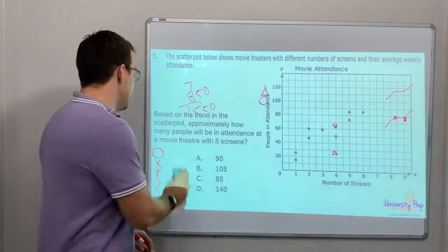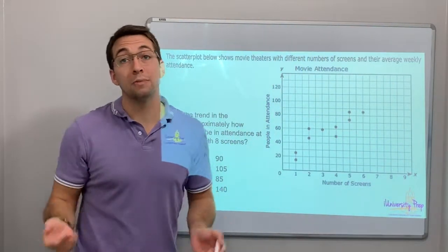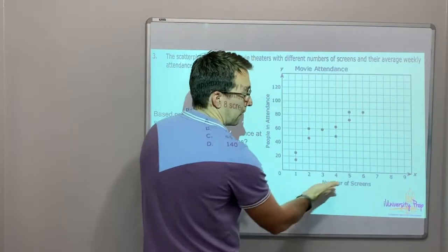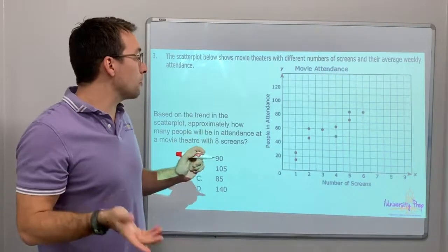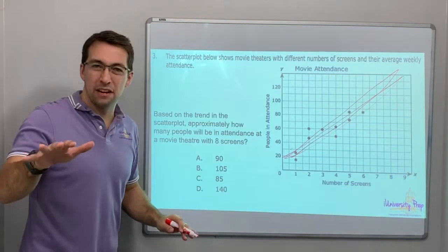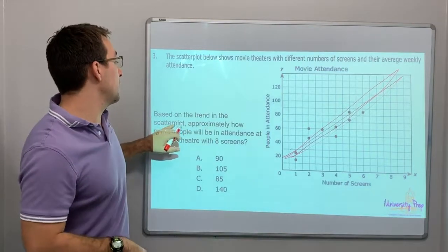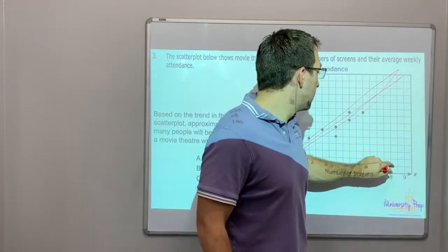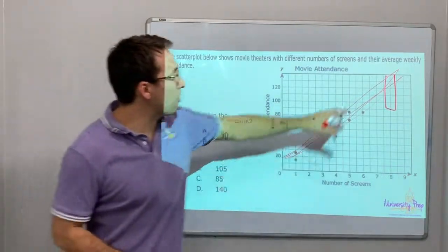Number three, the scatterplot below shows movie theaters with different numbers of screens and their average weekly attendance. So the number of screens are x value and the weekly attendance is the y value. Based on the trend, remember, scatterplots are for trends. So we could say, is that kind of a trend? That's kind of it, right? I think so. Based on this trend in the scatterplot, approximately, roughly, how many people will be in attendance at a movie theater with eight screens. So 8, we have this much, right? Maybe. Notice how approximate that is. Now, let's compare to our answers.